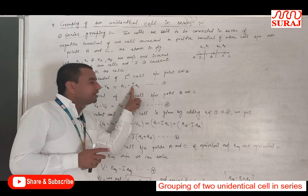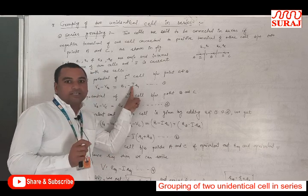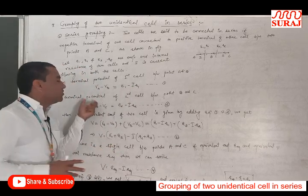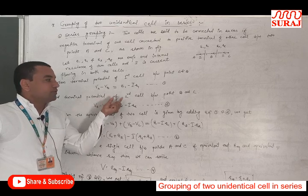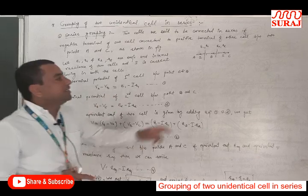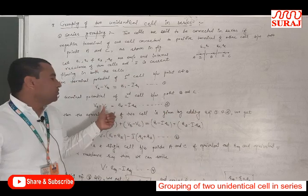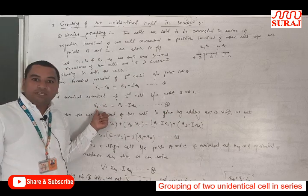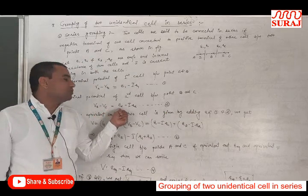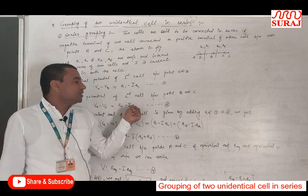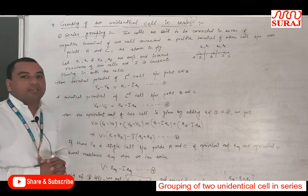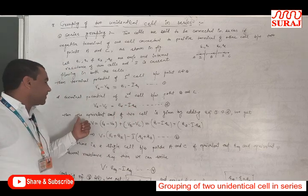So, the current in both cells is I. Now, the terminal potential of the second cell between points B and C is equal to V_B minus V_C, which is equal to E2 minus I·R2. The current is also the same here, I.